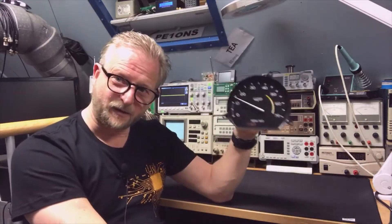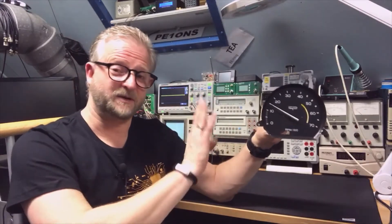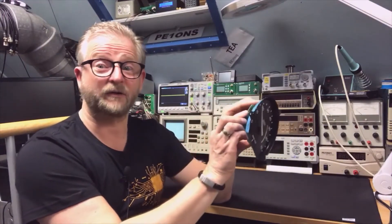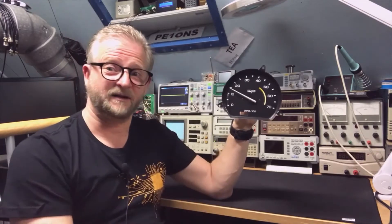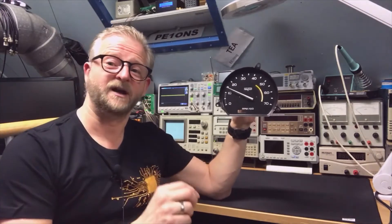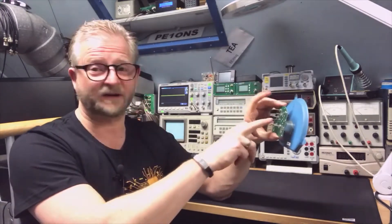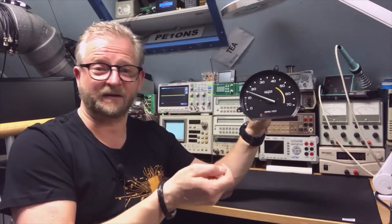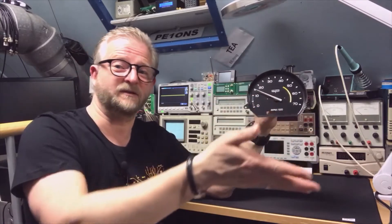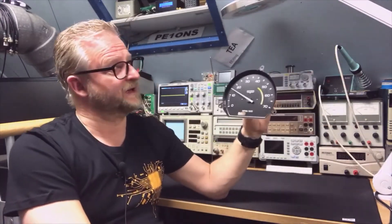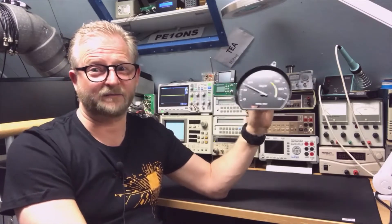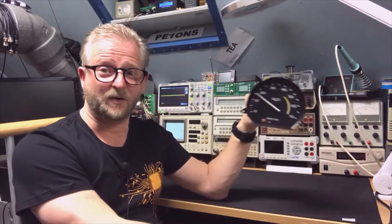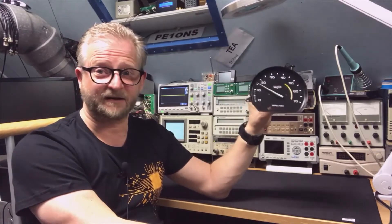First how these meters work: they just have a power connection of 12 volts because it's a car. And then there is one connection in the back that goes to the coil of the ignition. So the signal wire just listens to the coil that gets the pulses. This specific one is for an eight cylinder. It's a V8.